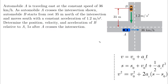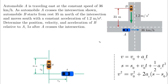Looking at the diagram, we can understand what is happening. This is the position vector of A, the position vector for B, and this is where B is starting from — 35 meters north. So RB initial will be 35 meters, and it is starting from rest with an acceleration of 1.2 meters per second squared.